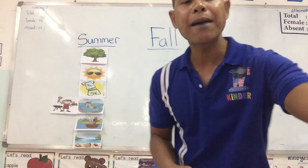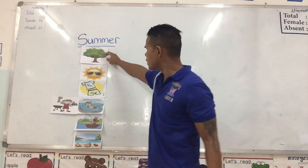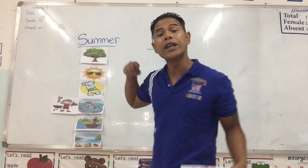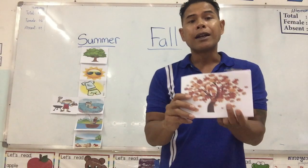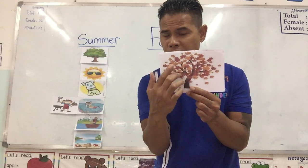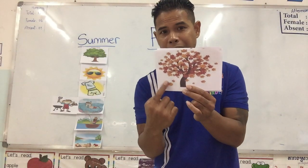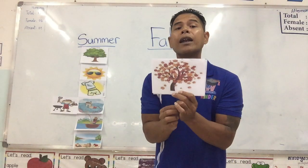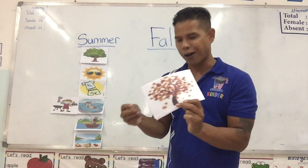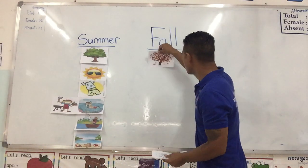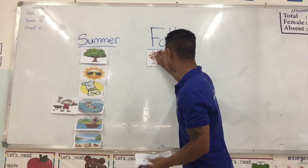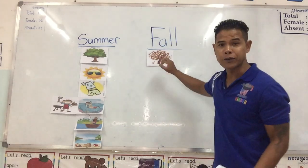So what happens in the fall? The trees in the summer are green and have a lot of fruit. And now look at the trees in the fall. The leaves are starting to change color — change to orange, red, and yellow. And they're starting to fall down from the tree. All the leaves are falling down from the tree. That happens in the fall. This is when the leaves start to change color.